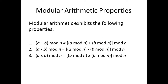Let's understand modular arithmetic properties. Property one: (a + b) mod n is equivalent to (a mod n + b mod n) mod n. Similarly, (a - b) mod n equals (a mod n - b mod n) mod n. This is also applicable to multiplication: (a × b) mod n can be written as (a mod n × b mod n) mod n. We'll understand all these using some sample values.